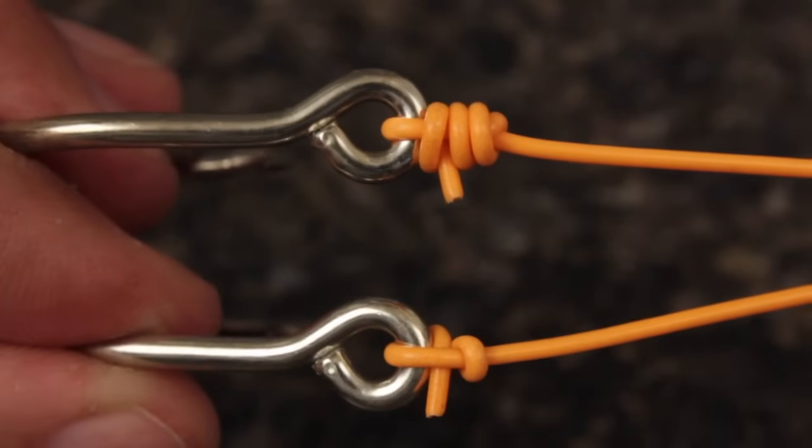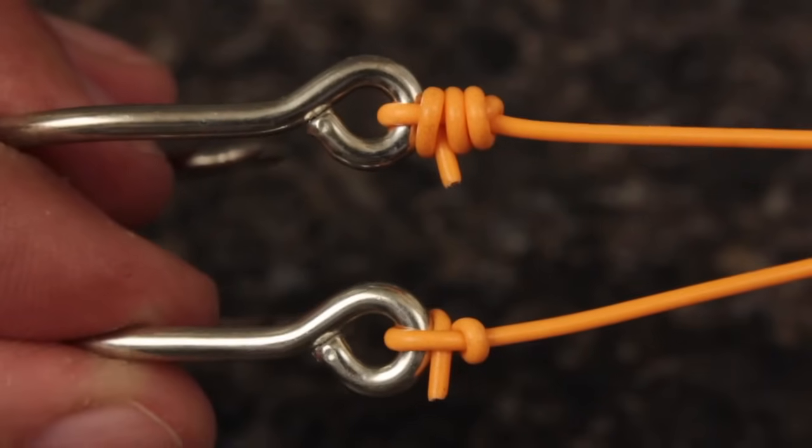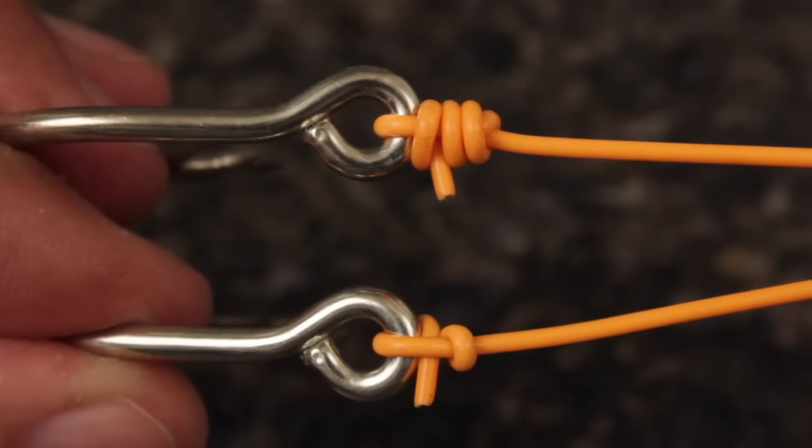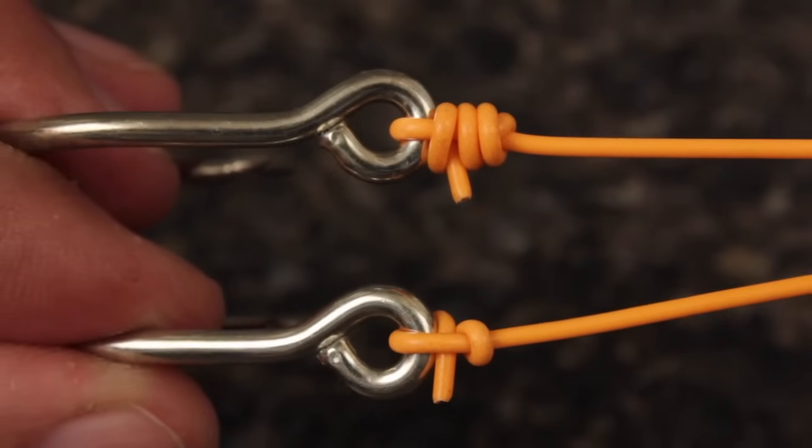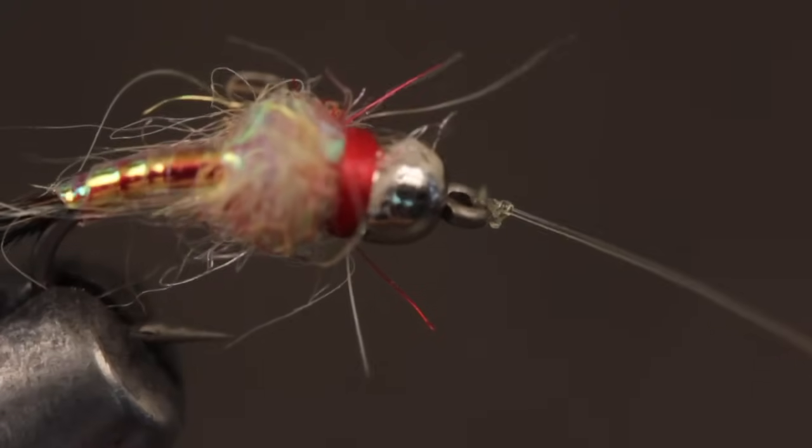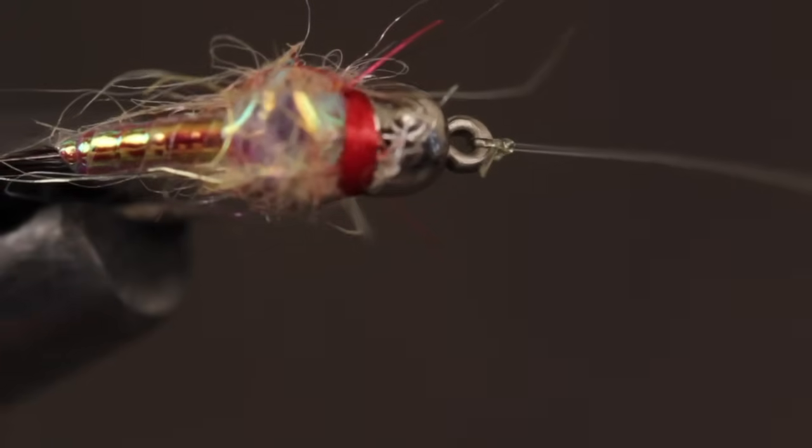You can see here how the improved clinch knot on top absolutely dwarfs the Davy Knot below. This makes the Davy Knot especially valuable when you're tying on small flies to be used on finicky trout.